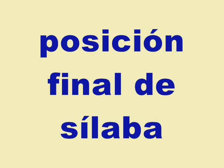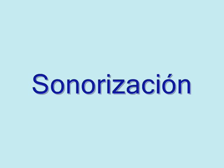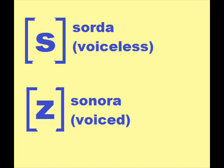One way that it can become similar is through sonorización, which means becoming a voiced consonant. For example, S is unvoiced — sorda — when you say S, you don't use your vocal cords. However, the sound Z — you can feel your vocal cords vibrating, so this is a voiced sound, and in Spanish we call that sonora.